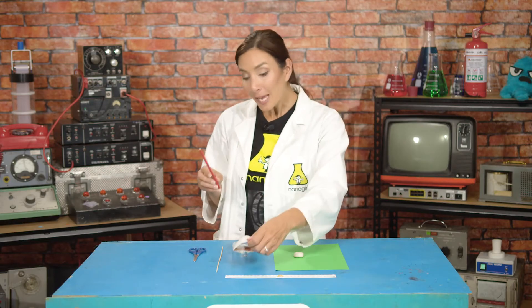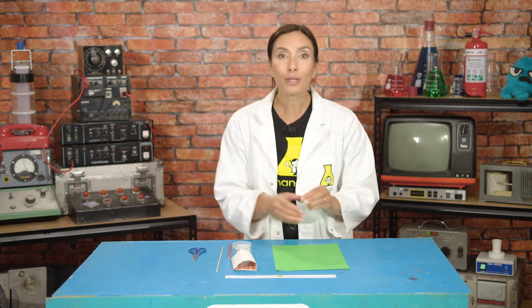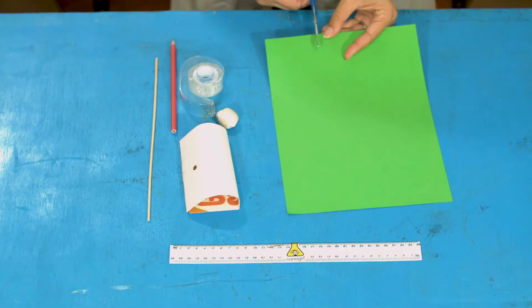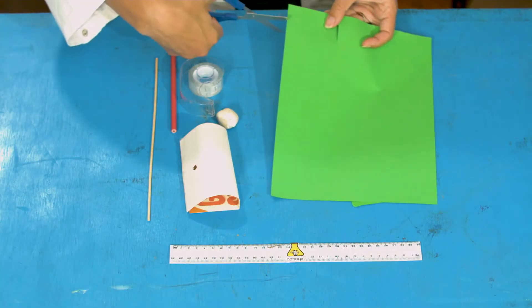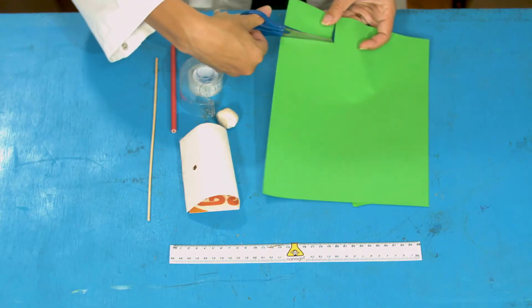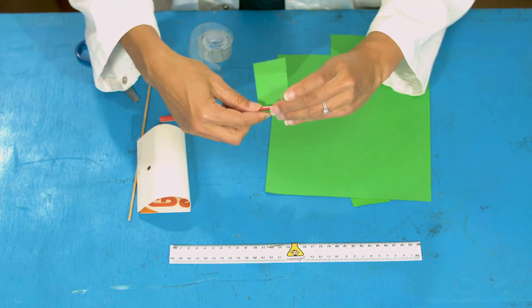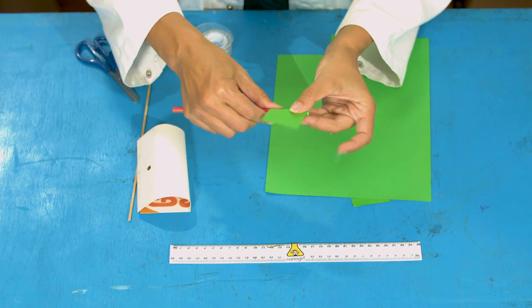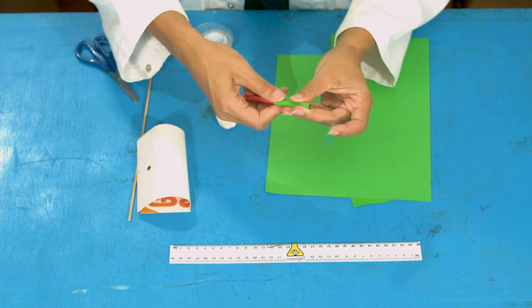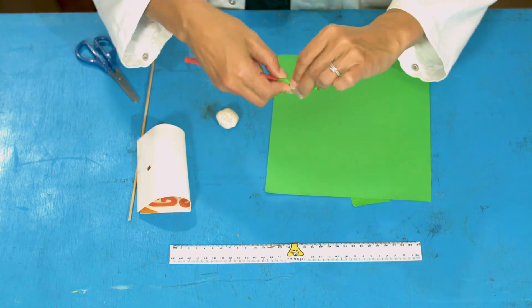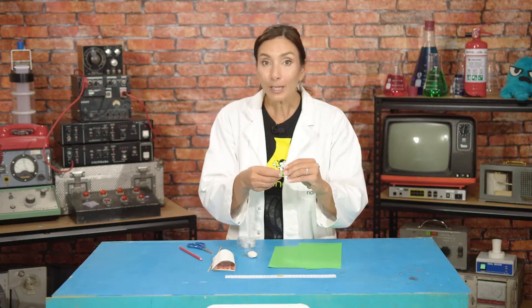Now we need to make a paper straw. And we are going to do that by rolling a small strip of paper around a pencil. So I am just going to cut a small piece like this off a sheet of paper. And I am going to wrap it around a pencil and have some tape ready to go. Like this. And then tape it like this. So this is our little paper straw.